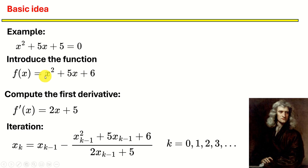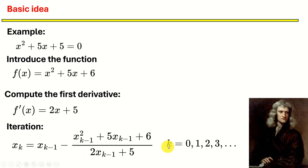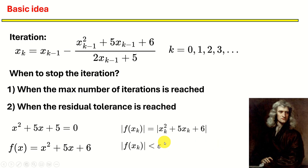Let's go back to the example and look at how this iteration will look for this quadratic equation. The first derivative is obviously 2x plus 5. If we substitute f in the numerator and f prime in the denominator, we obtain this iteration, and we propagate it for k = 1, 2, 3, etc. Simple as that.